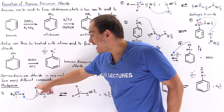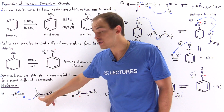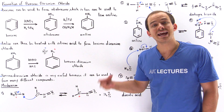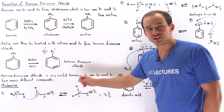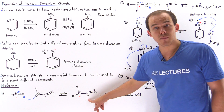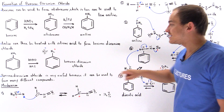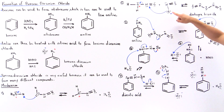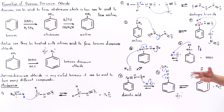The purpose of this is to create a good leaving group. Our OH (hydroxide) is not a good leaving group, but if we protonate the oxygen, we create a molecule that is a good leaving group. Now let's take this molecule and react it with the conjugate base of nitrous acid — this is nitrous acid, and its conjugate base is shown here.